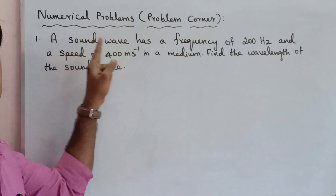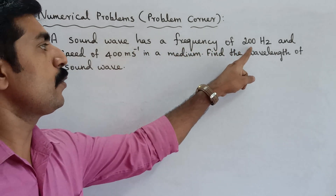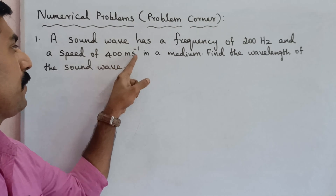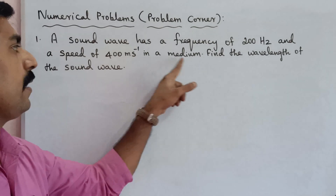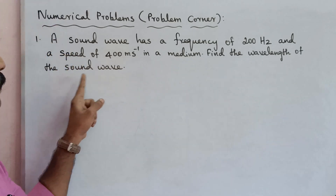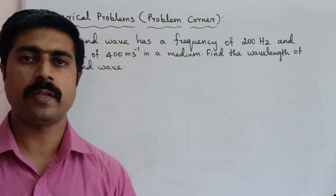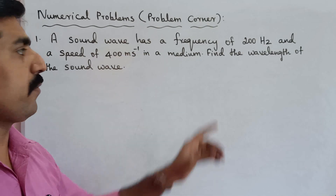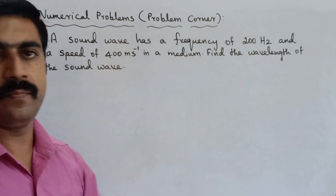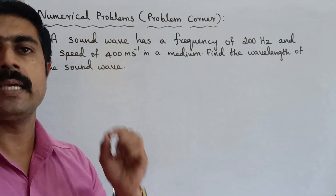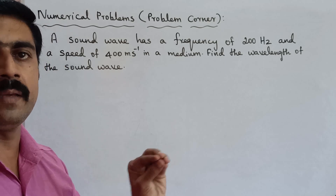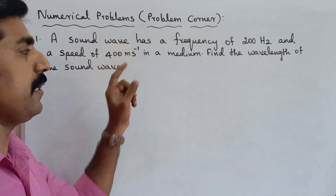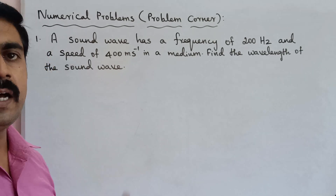First one: a sound wave has a frequency of 200 Hz and a speed of 400 meters per second in a medium. Find the wavelength of the sound wave.